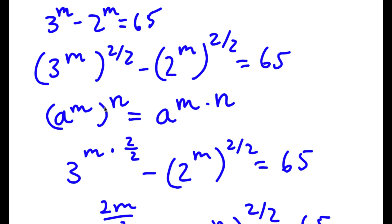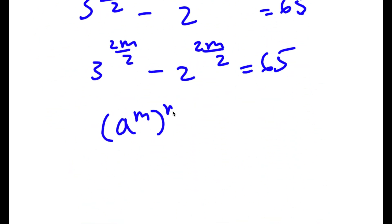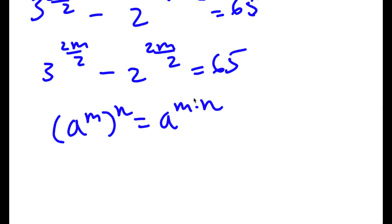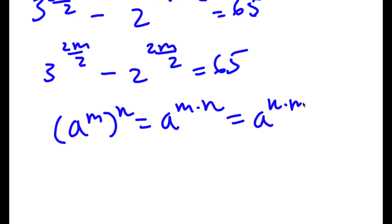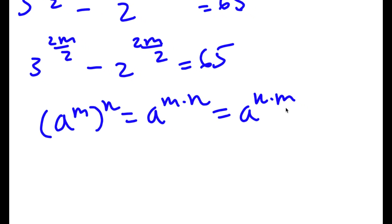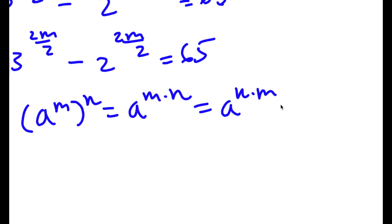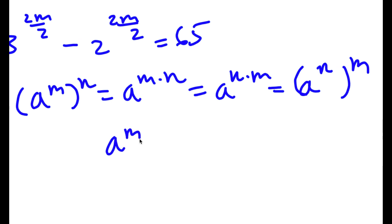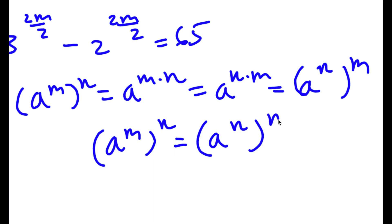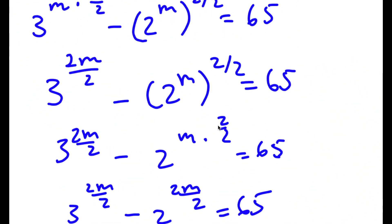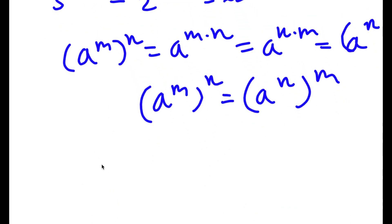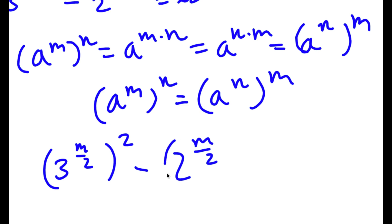Remember, if I have a to the power of m to the power of n, this equals a to the power of m times n. And m and n are interchangeable — m times n equals n times m because order doesn't matter in multiplication. So a to the power of m to the power of n also equals a to the power of n to the power of m. That means we can rewrite 3 to the power of 2m over 2 as 3 to the power of m over 2 to the power of 2, and 2 to the power of 2m over 2 as 2 to the power of m over 2 to the power of 2.